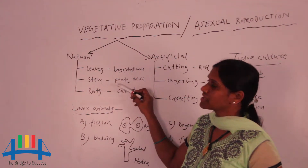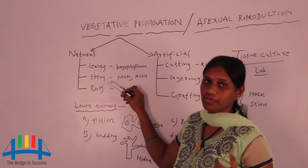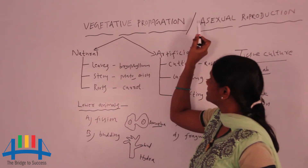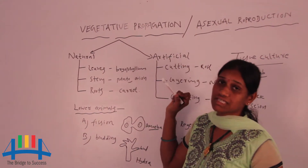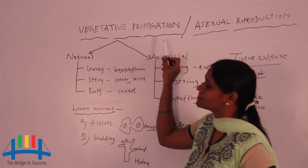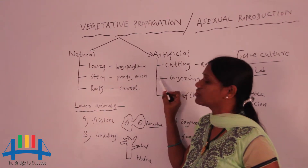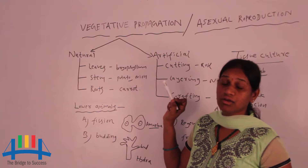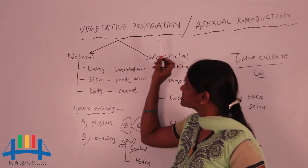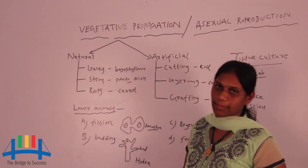The second way is through the stem. The stem is also one way to get new plants naturally in the process of asexual reproduction, also known as vegetative propagation. Examples are potato and onion — both produce new plants through the stem by vegetative reproduction.